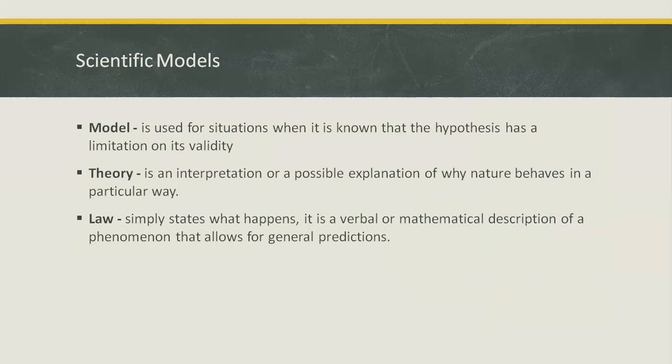While theory represents a hypothesis which has been confirmed through repeated testing. Generally, a theory is an interpretation or a possible explanation of why nature behaves in a particular way. Theories are evolving as more information becomes available. For example, the motions of the sun and the stars have remained virtually the same over the thousands of years during which humans have been observing them, but the theories for these motions have changed greatly since ancient times.